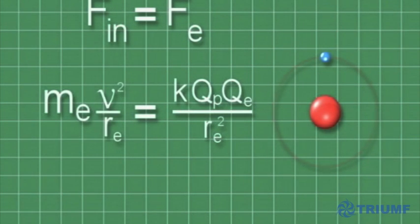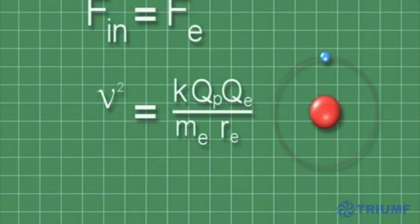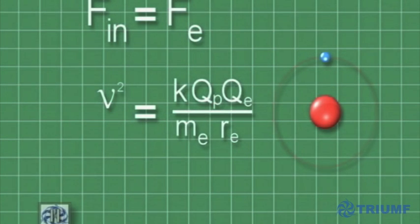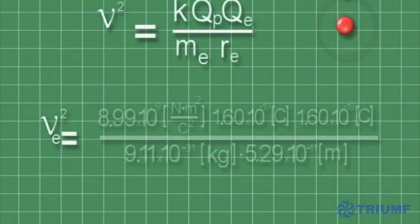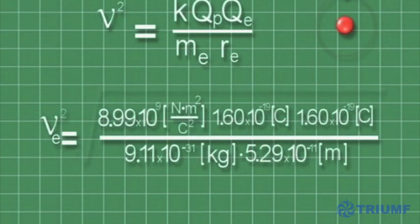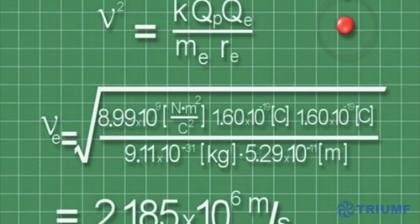Let's first substitute in the expression for the centripetal acceleration, and then rearrange the formula to isolate the velocity on the left-hand side. Plugging in the known values for the charges, the mass of the electron, and the radius, we can determine the electron's velocity.